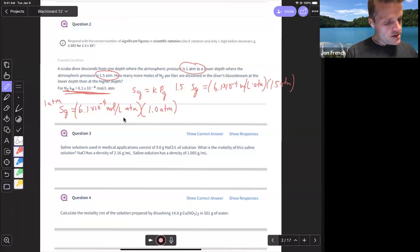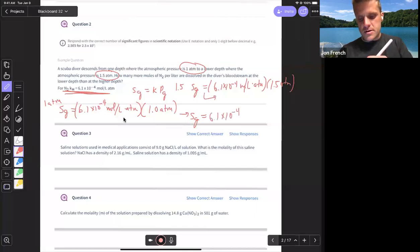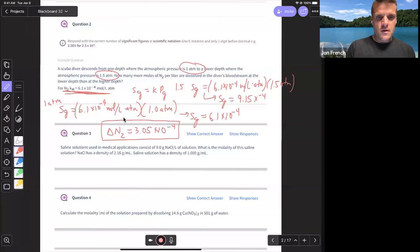So 6.1 times 10 to the minus four times 1.5. Here our solubility is 6.1 times 10 to the minus four, and then up here our solubility is 9.15 times 10 to the minus four. So because it's asking how many more moles per liter are dissolved, I would subtract those two to find the difference. So I'm going to subtract 6.1 times 10 to the minus four to see that the change in the moles of nitrogen is 3.05 times 10 to the minus four, which is the difference between those two for question two.